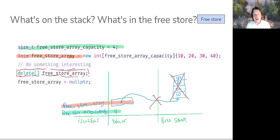To prevent us from inadvertently going back to this array and interacting with the data that may or may not be there, depending on when it becomes overwritten, we simply say that relationship is no longer valid. We'll say that our free_store_array now points to nothing.